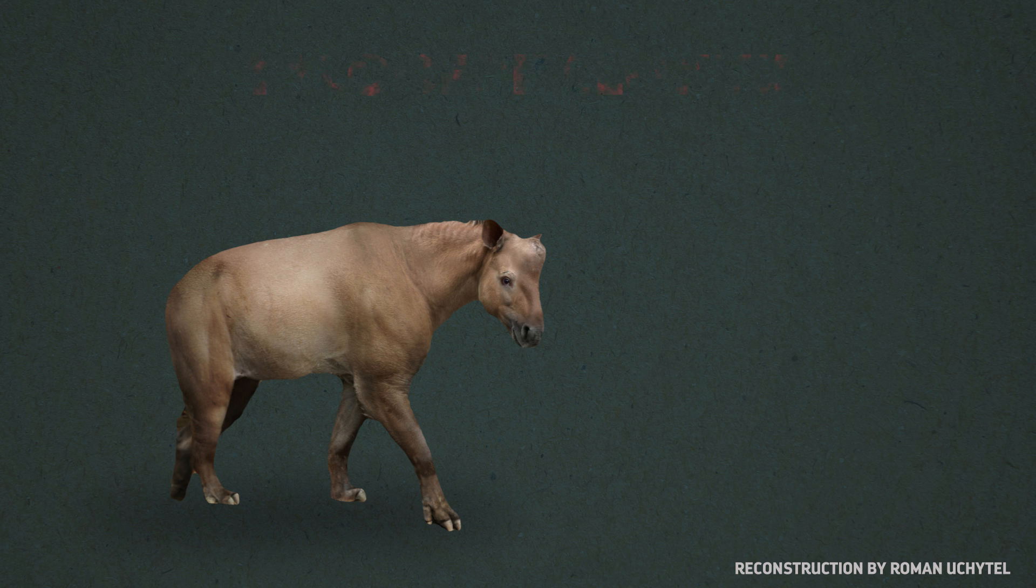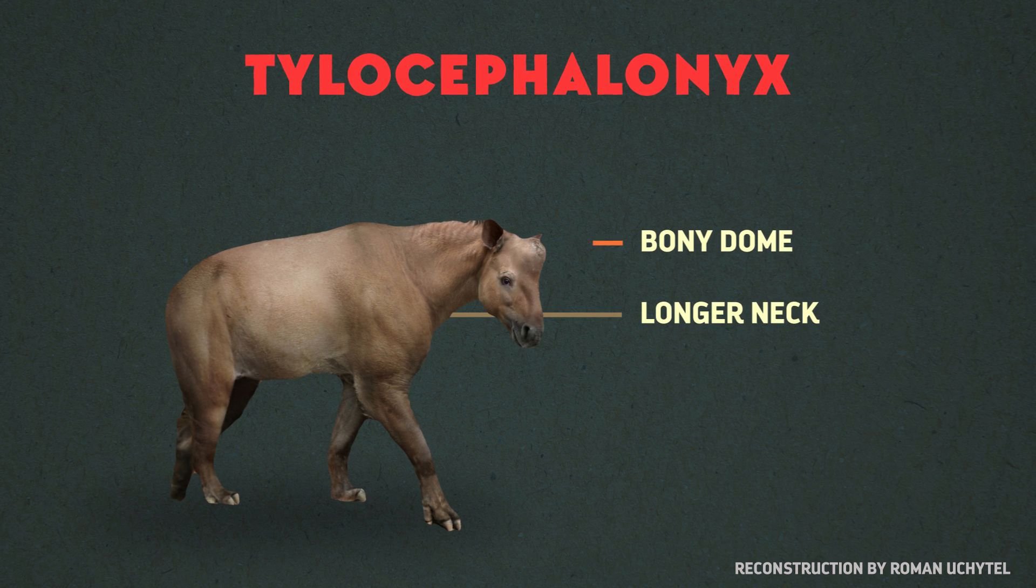The other is called Tylocephalonyx, and it turned out to look a little more horse-like, but with a longer neck and this weird bony dome on its skull. So what happened? How did two of the same kind of animal living in the same place end up looking so different? The answer is parallel evolution.